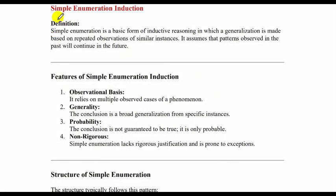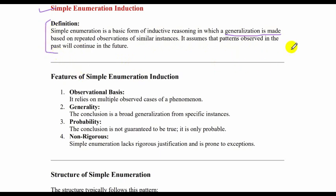Now let us come to our main topic: simple enumeration induction. Simple enumeration is a basic form of inductive reasoning in which a generalization is made — that is, a conclusion is drawn — based on repeated observations of similar instances. It assumes that patterns observed in the past will continue in the future. This definition we will have to remember.